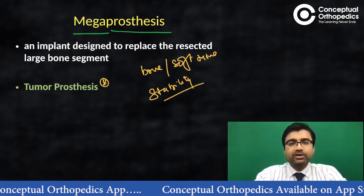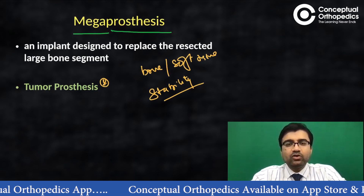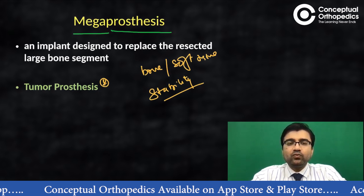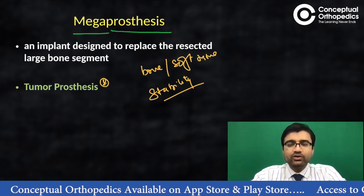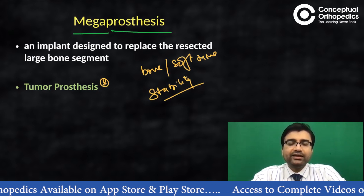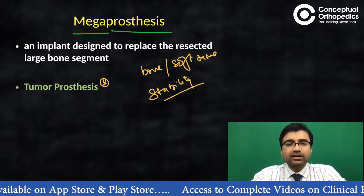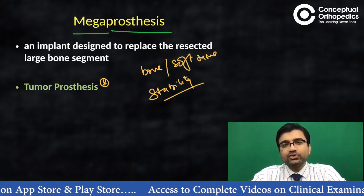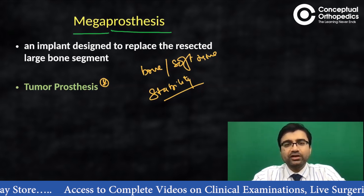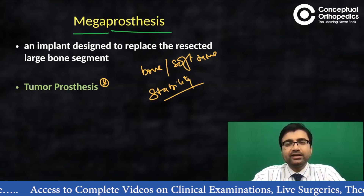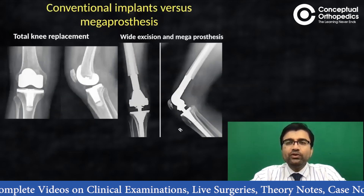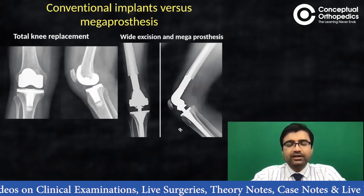The terminology 'tumor prosthesis' carries the same meaning. We prefer 'mega prosthesis' because when you are doing surgery for a sarcoma or benign tumor, 'tumor prosthesis' is more appropriate. However, if it is used for revision replacement or another bone defect due to other reasons, then 'mega prosthesis' is the right term.